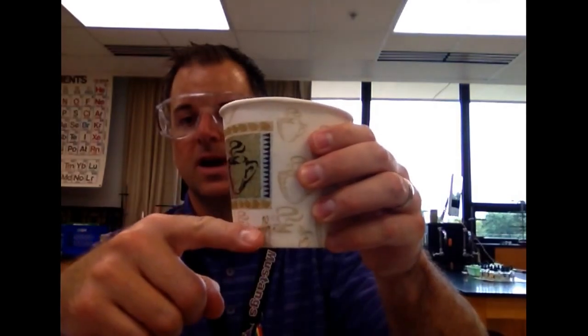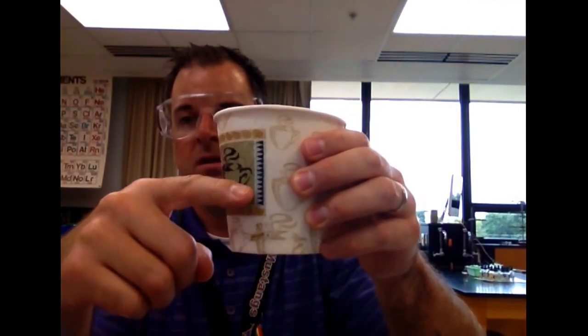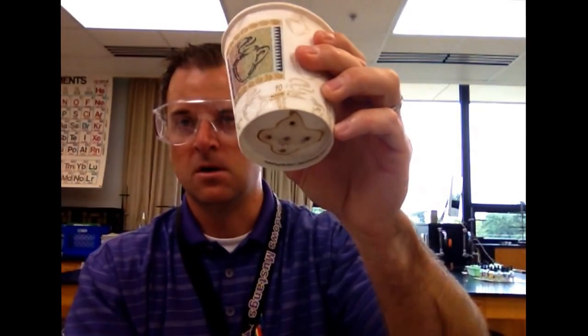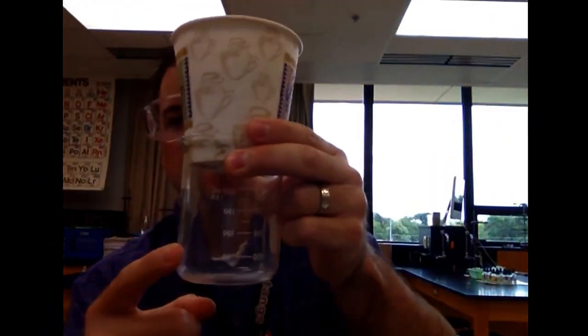Once we get done with that, then we're actually going to start to clean it. The first step is the sand gravel filtration. You've got a cup here and on the inside you can see some gravel—it's actually layers of gravel, and then there's sand, and then there's more gravel, and then underneath you can see there are some holes. You're going to grab a 250 milliliter beaker, put that underneath, and you're going to pour your foul water through here.